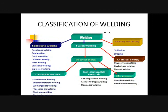So this is the main classification with respect to welding. Remember these two: fusion and non-fusion. In fusion, it will be gas welding, arc welding, and chemical welding. In non-fusion welding, it is with the application of heat and without the application of heat. Now let's look at what each of these terms means.